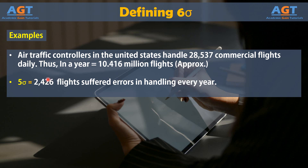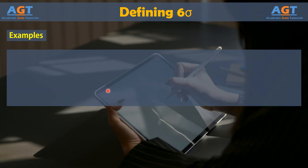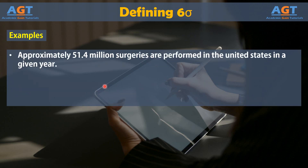errors of some type occur in the process for handling approximately 2,426 flights every year. With a Six Sigma process, that risk drops to just 35.41 errors.